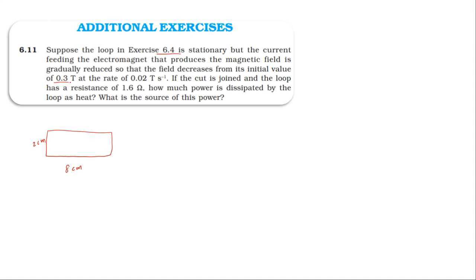In the 0.3 tesla magnetic field, the magnetic field changes with respect to time at a rate of 0.02 tesla per second.